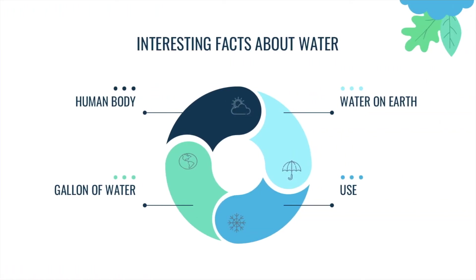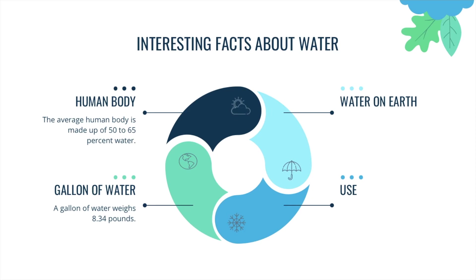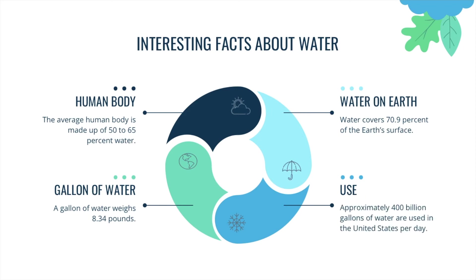Here are some interesting facts about water here on earth. The average human body is made up of 50 to 65% water. Did you know a gallon of water weighs 8.34 pounds? Water covers 70.9% of the earth's surface. Did you know that approximately 400 billion gallons of water are used in the United States per day?